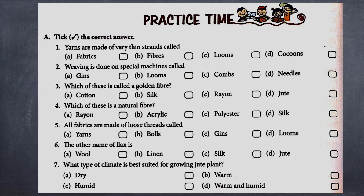Sixth: the other name of flax is — A) wool, B) linen, C) silk, D) jute. Seventh: what type of climate is best suited for growing jute plant? A) dry, B) warm, C) humid, D) warm and humid.